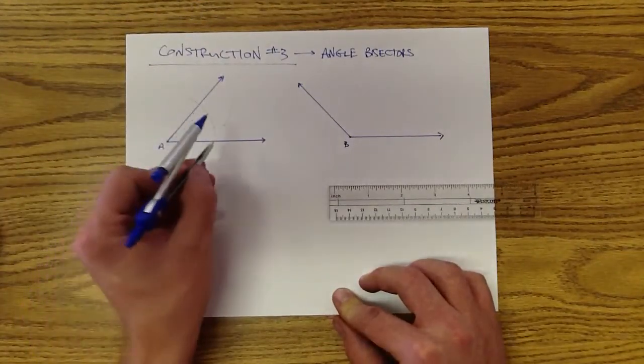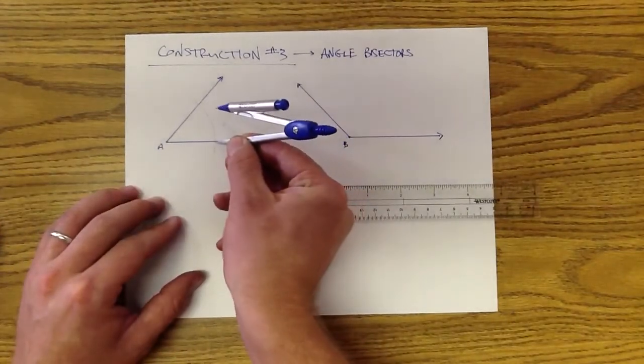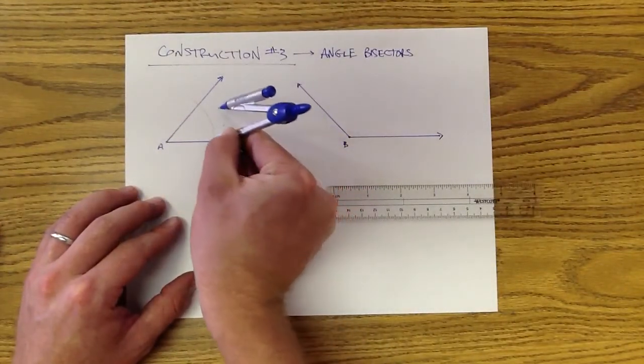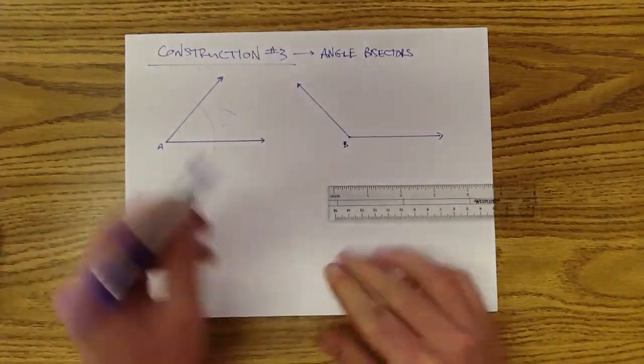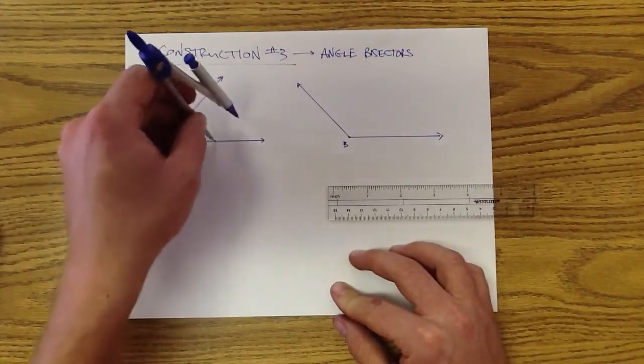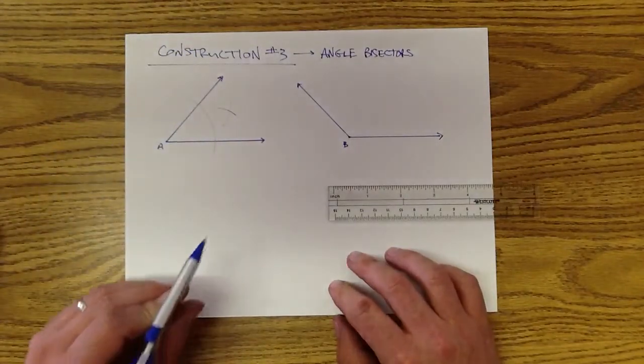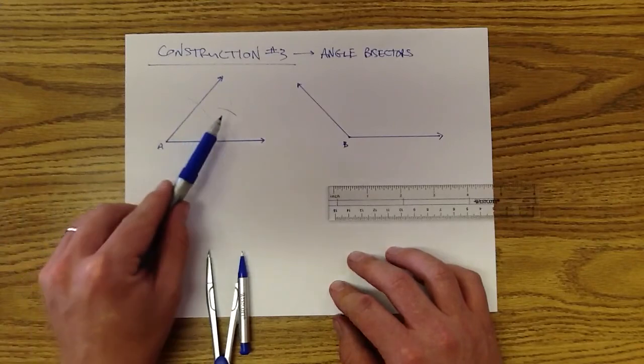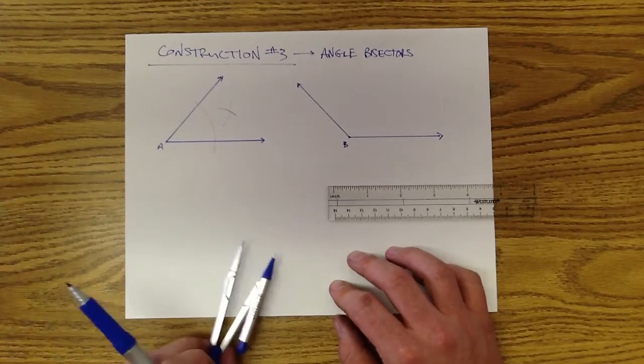Once you do that, you're going to move down here. Take the point of your compass and it's going to be that intersection point there, and you're going to use that to draw another arc over here. So you have two arcs that are drawn that intersect at this point right here. That's going to be the intersection point between those two arcs.